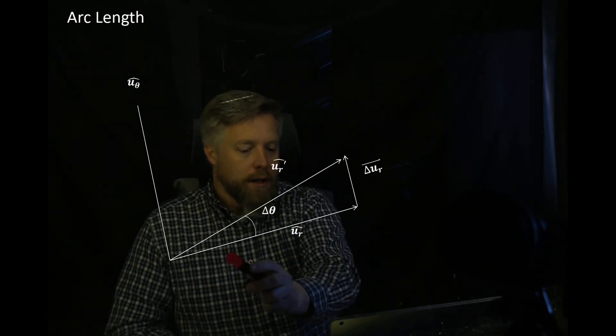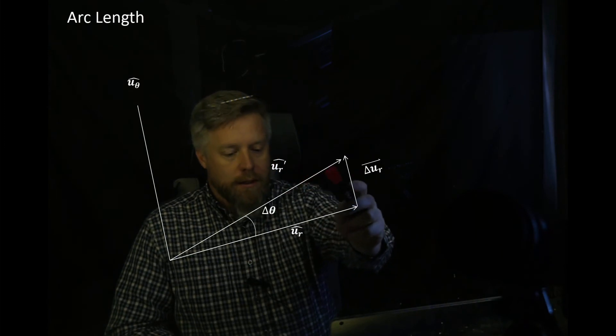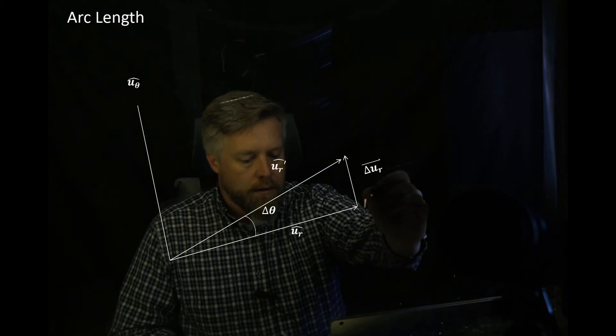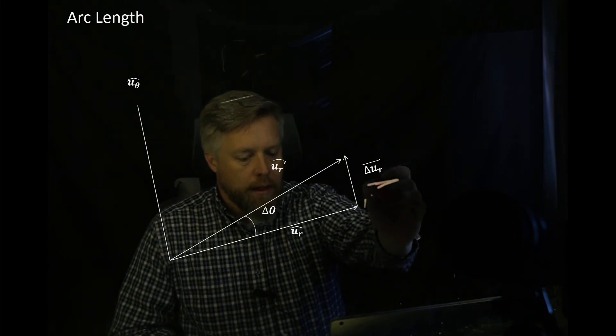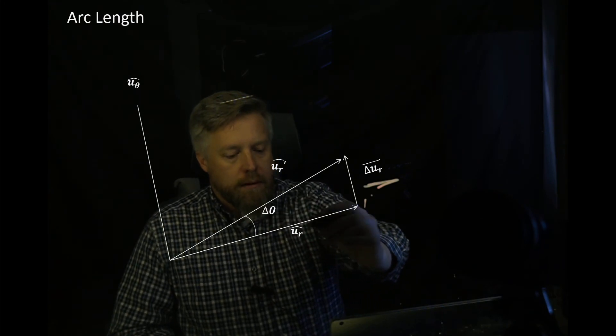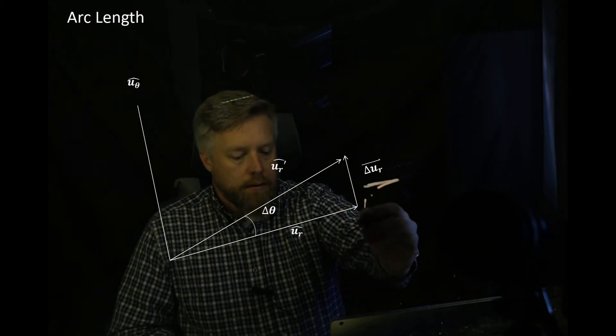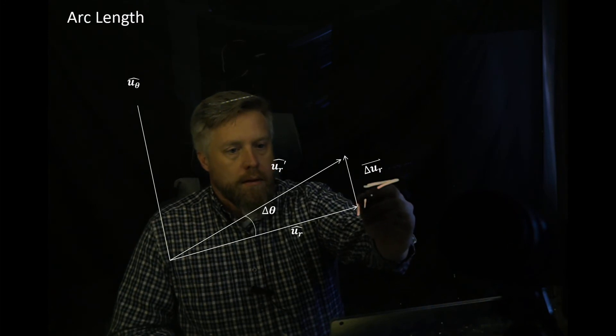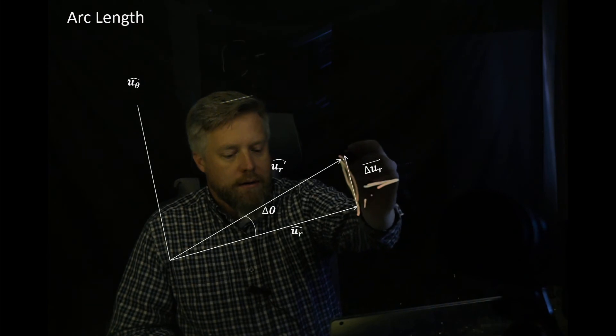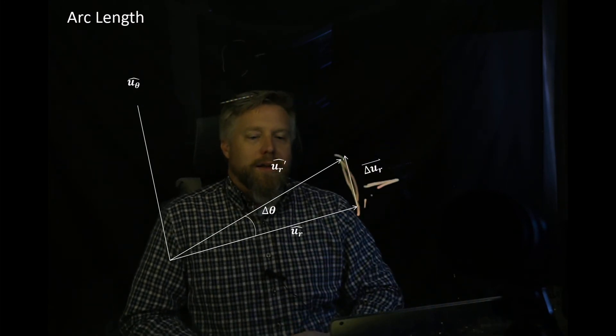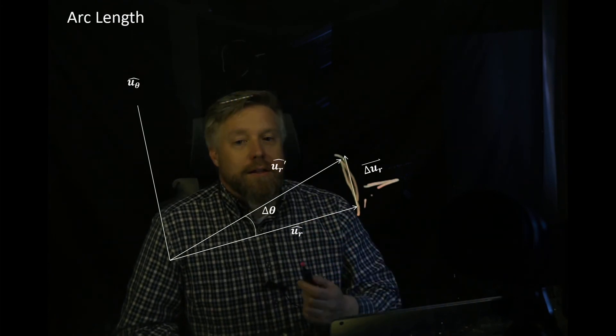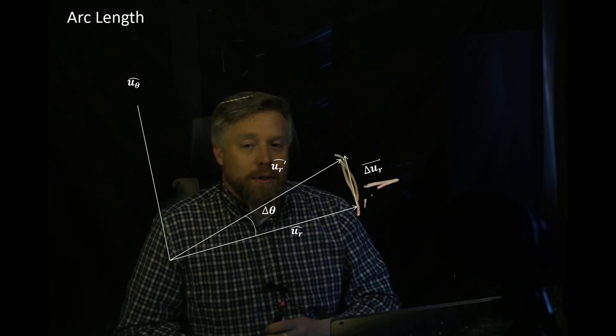We have a unit vector here and another unit vector a little bit later. You can see this vector represents the change. That change for really small angles is very close to the arc length. Picture an arc connecting those two. That arc length is the change in angle times the length of that vector, the radius. That's what we learned with arc length.